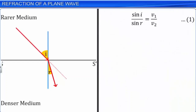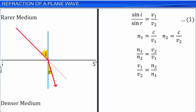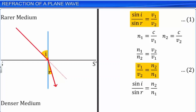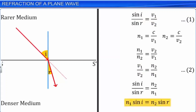If C is the speed of light in vacuum, then the refractive index of medium 1, N1, is equal to C by V1, and the refractive index of medium 2, N2, is equal to C by V2. Therefore, N1 by N2 is equal to V2 by V1, which can also be written as V1 by V2 is equal to N2 by N1. From equations 1 and 2, we can write sin I by sin R equal to N2 by N1, which can also be written as N1 sin I equal to N2 sin R. This is Snell's law of refraction.